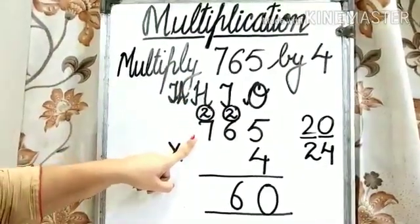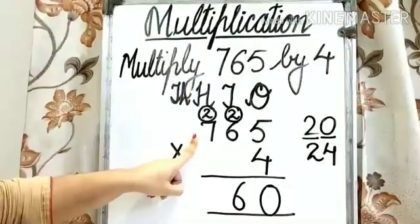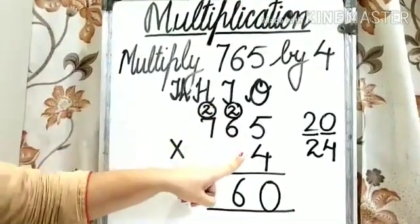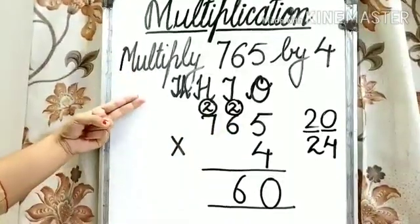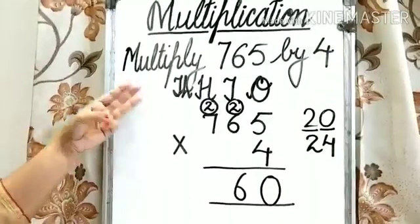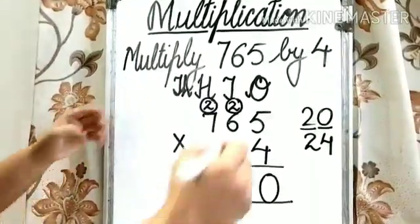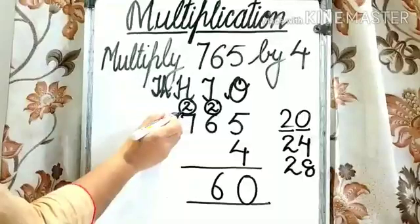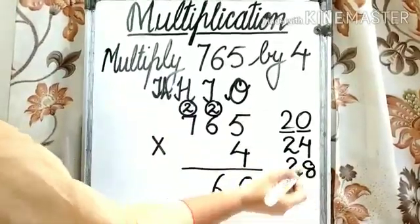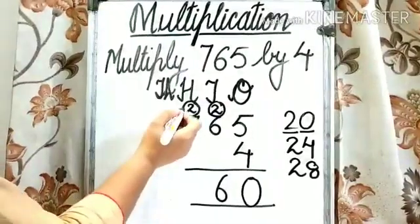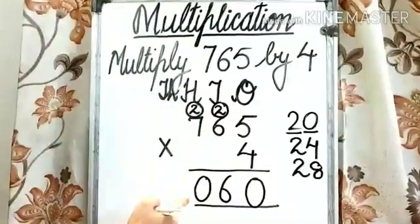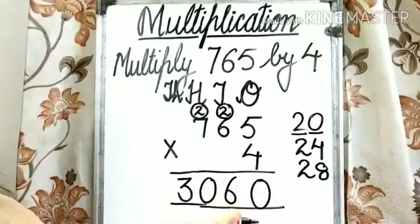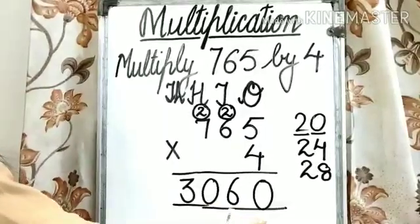Step 3: multiply the digit at the 100s place by 4, meaning we need to multiply 7 by 4. 7 4s are 28. Do not forget to add the carry over 2 to 28, so 28 plus 2 is 30. Write down 0 under the 100s column and 3 under the 1000s column. Our product is 3060. Thank you, students.